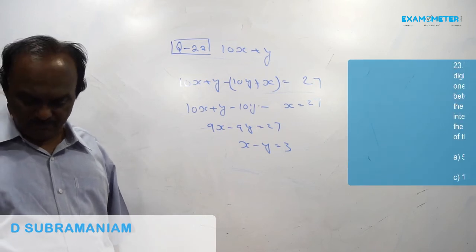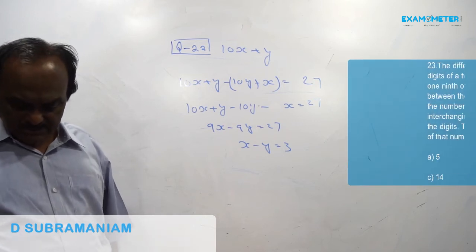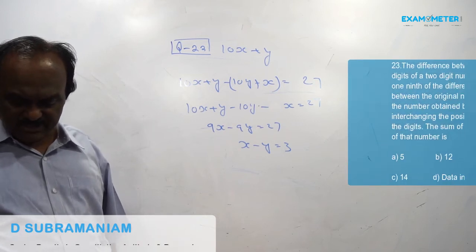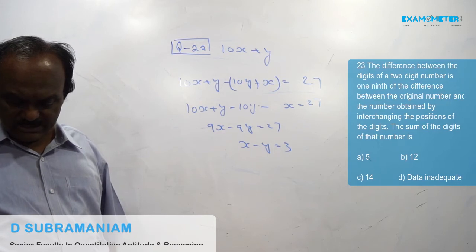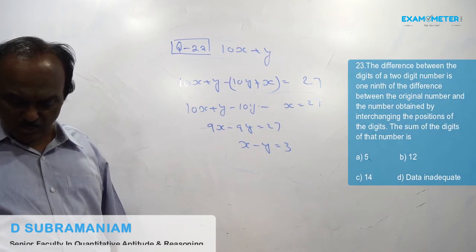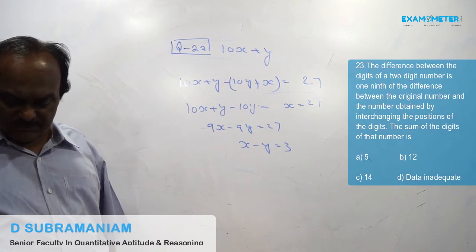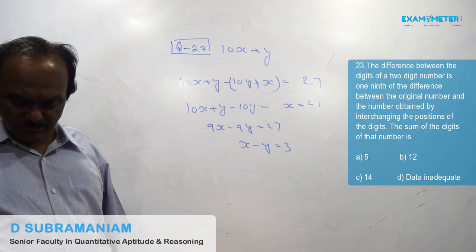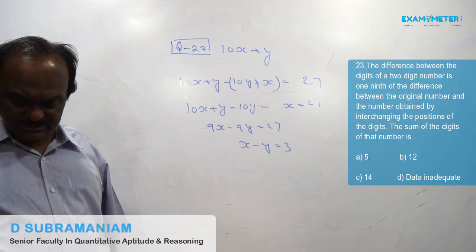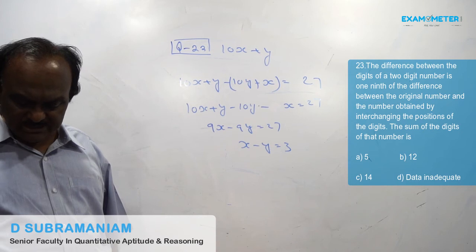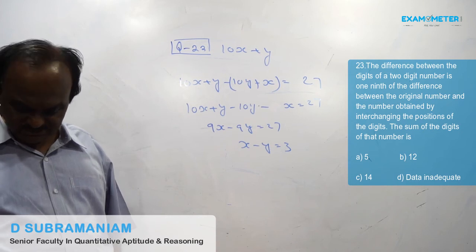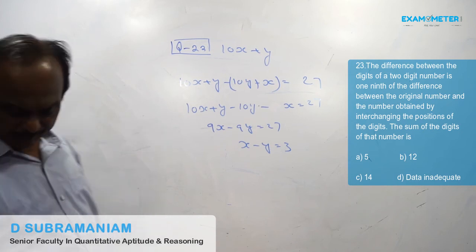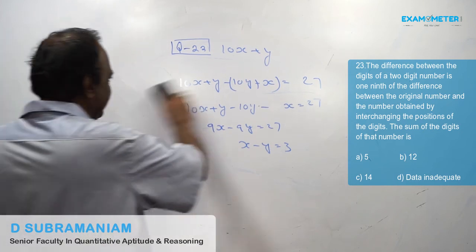23rd problem: The difference between the two digits of a two-digit number is one-ninth of the difference between the original number and the number obtained by interchanging the positions of the digits. The sum of the digits of that number is?